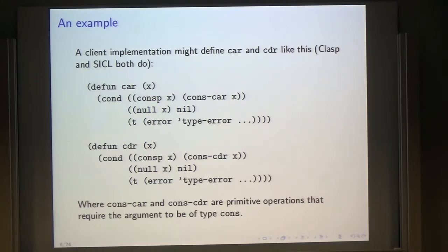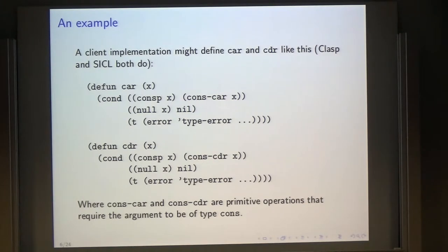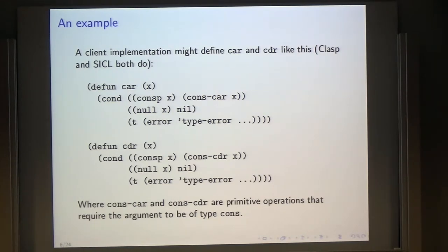Let me take basically the same example, except I use a slightly different name here than Alec used yesterday. We can imagine CAR and CDR being implemented this way in a particular implementation. CAR is testing whether it's a cons; in that case it uses some lower level primitive, in this case cons-car, that requires its argument to be a cons. Otherwise if the argument is null, then it returns nil, and otherwise calls some error. CDR is basically the same except that it calls cons-cdr.